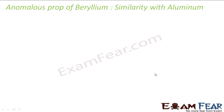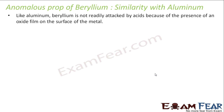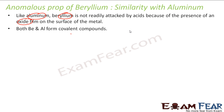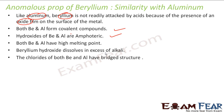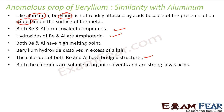Now let us discuss the similarities between beryllium and aluminium. The first similarity is that both aluminium and beryllium are not attacked by acids due to the presence of oxide films formed on the metals. Both beryllium and aluminium form covalent bonds. Hydroxides of both beryllium and aluminium are amphoteric. Both have high melting points. Beryllium hydroxide dissolves in excess of alkali, just like aluminium. The chlorides of both beryllium and aluminium have bridge structures.